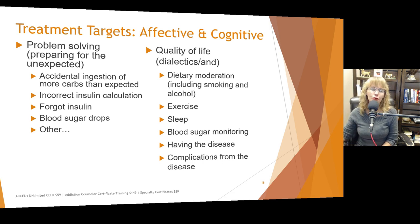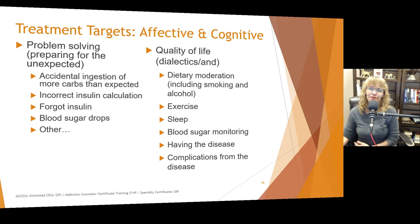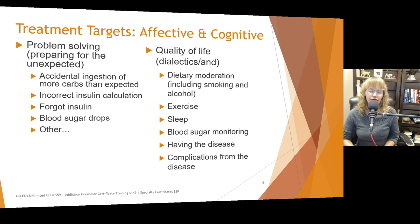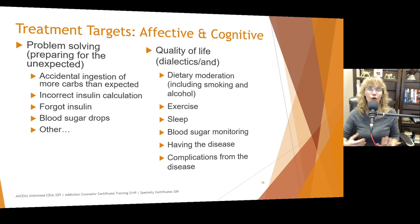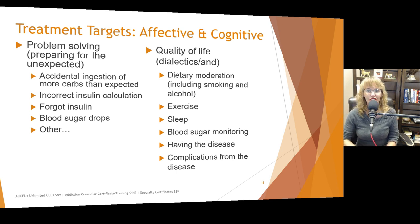It's important for people to be prepared for their pump to break down, for accidentally ingesting more carbs than expected, for incorrectly calculating insulin and taking too much — which can send someone into hypoglycemia — or for forgetting their insulin at home. If blood sugar drops or spikes unexpectedly, what do you do? What things do you need to have with you, like backup insulin? How do you handle different situations when they arise?